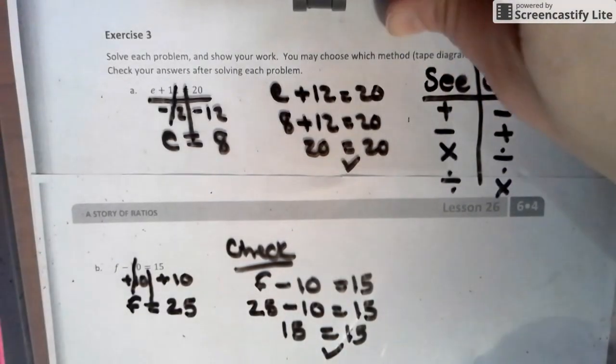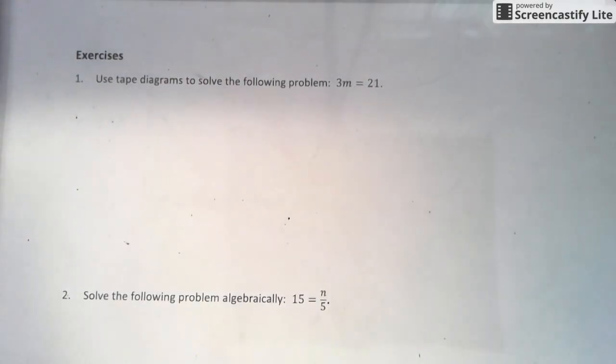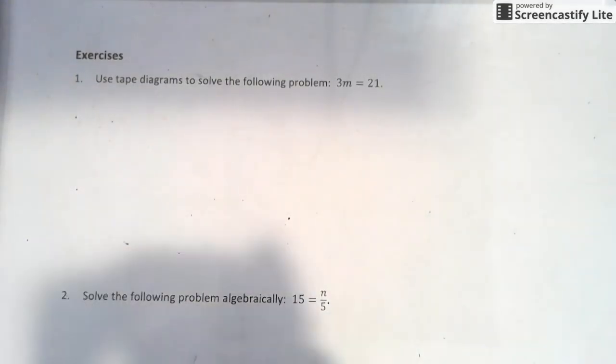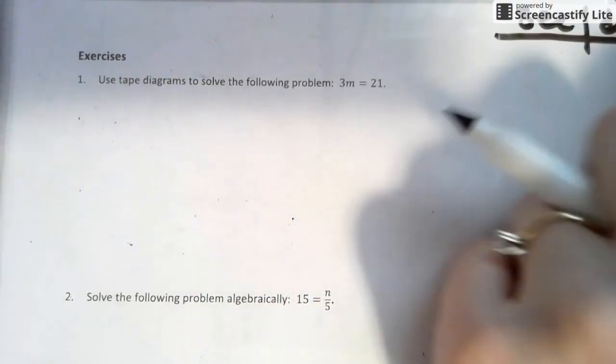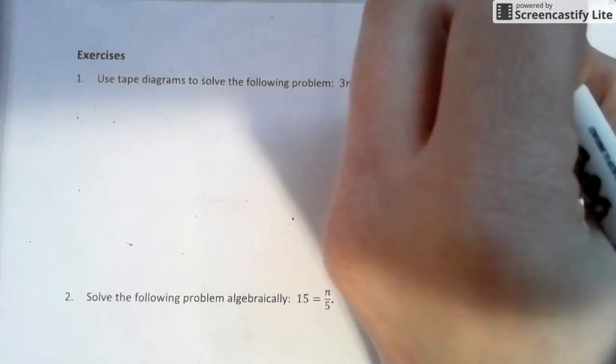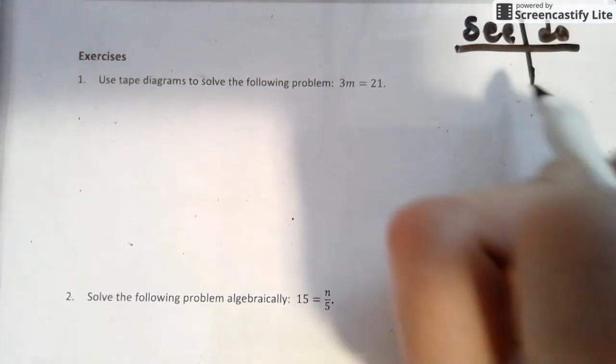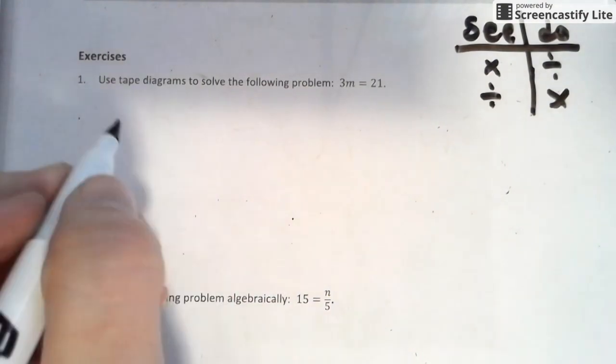Now that was lesson 26. Lesson 27 is down here, and that's lesson 27, probably somewhere around like page 148 probably. So back to those same rules: remember, see do. We see multiplication, we do division. We see division, we do multiplication. Adding and subtracting stuff is above.